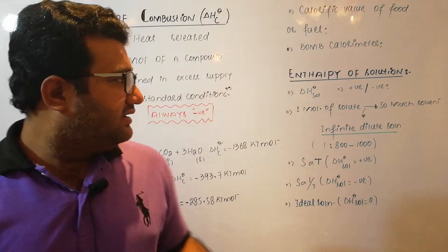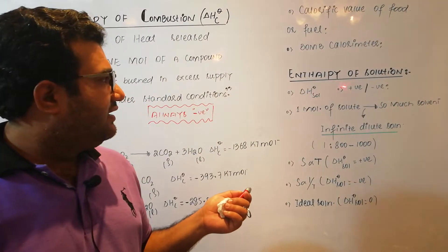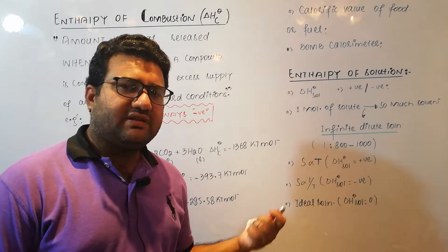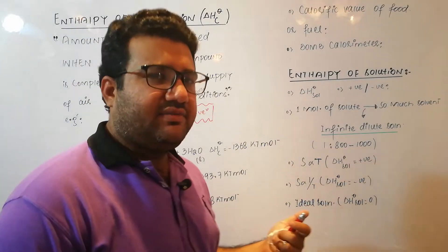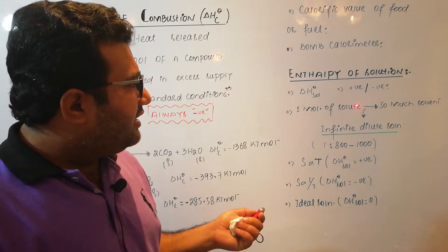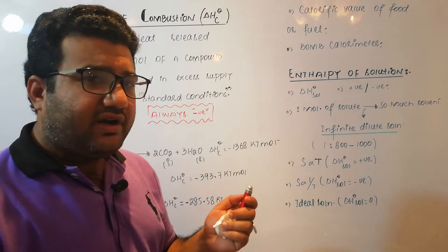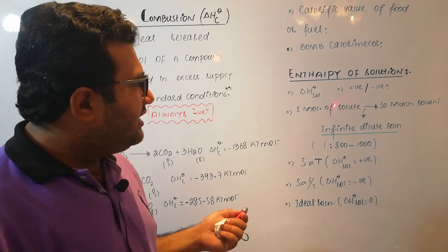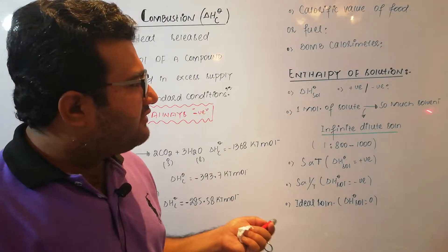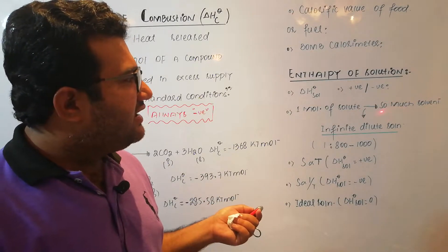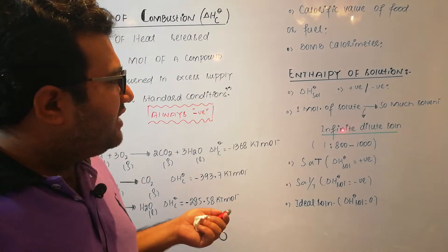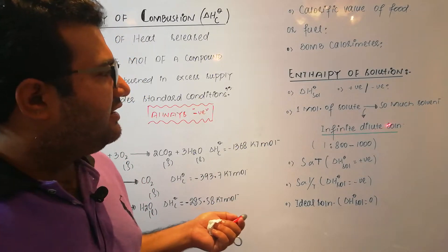The next one is enthalpy of solution, shown with the symbol ΔH°. It might be positive or negative because solution formation can be either endothermic or exothermic. In this case, one mole of solute is dissolved in so much solvent. The amount of solute must be one mole, but the amount of solvent is not fixed — rather, it must be enough to result in an infinitely dilute solution.